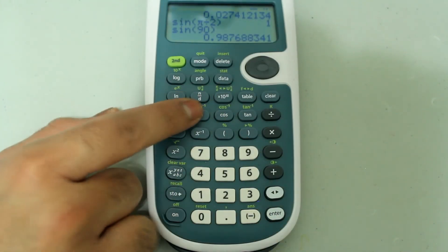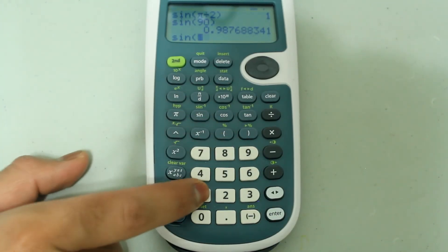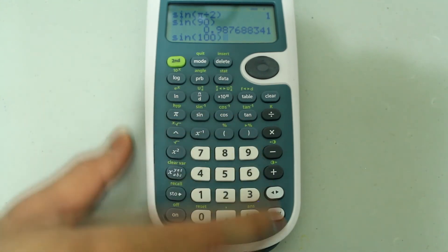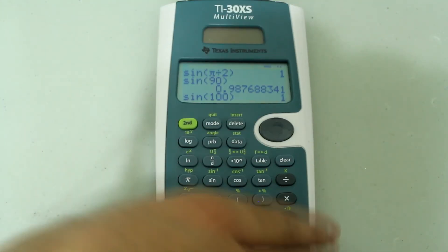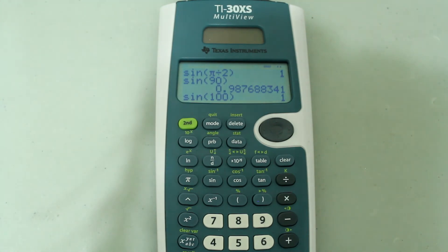But if I do sine of 100, close the parenthesis, press enter, I get the answer as 1. And that's because there are 90 degrees in 100 gradients. So I just wanted to point that out.